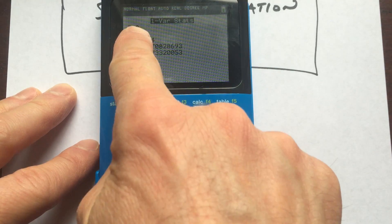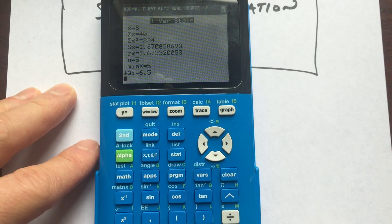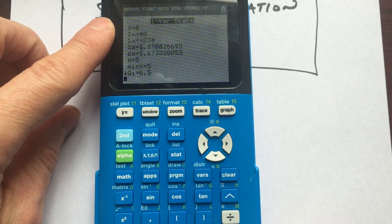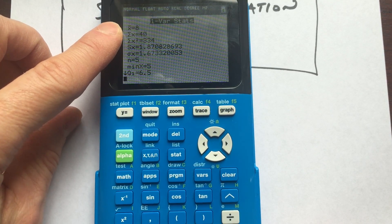And there you go. So if you scroll down, you can see x bar there, the one at the top, this represents the mean, the average, it's eight.